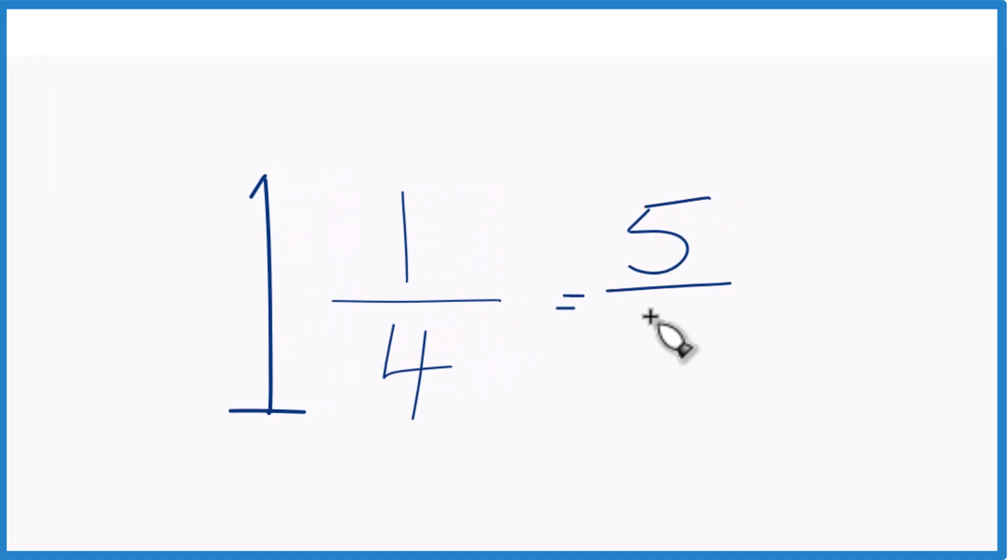And then we just bring the denominator across. And the mixed number 1 and 1 4th equals the improper fraction 5 4ths. And it's improper because the numerator here is larger than the denominator.